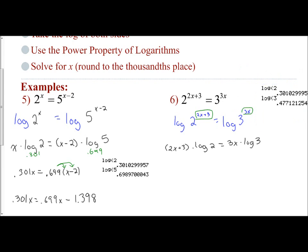So really, I have my 2x plus 3, that parentheses. It's being multiplied by log of 2, which is 0.301. So I'm going to put that out front, 0.301 times 2x plus 3. I have 3x times log of 3, which log of 3 is 0.477.